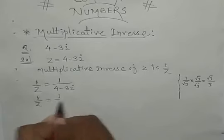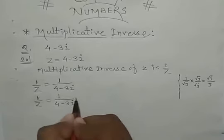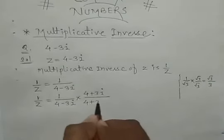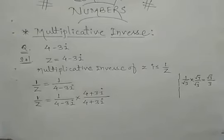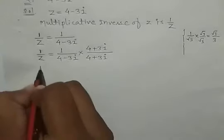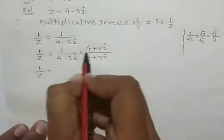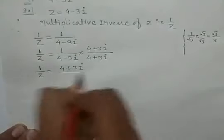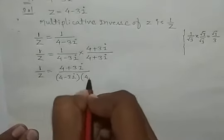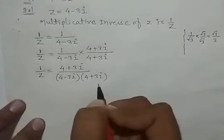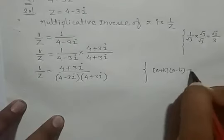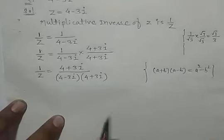To rationalize, 1 by z is equal to 1 upon (4 minus 3i) multiplied by (4 plus 3 iota) upon (4 plus 3 iota). When you multiply, the numerator becomes 4 plus 3 iota, and in the denominator we apply the identity: a plus b into a minus b is equal to a square minus b square.